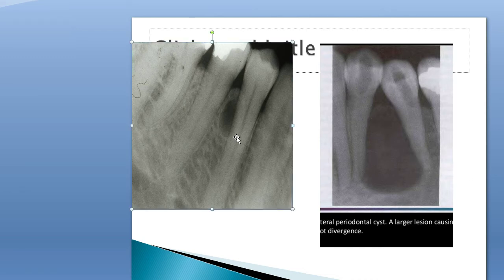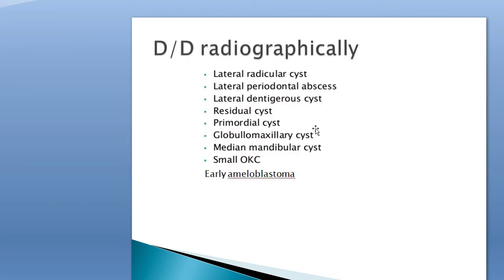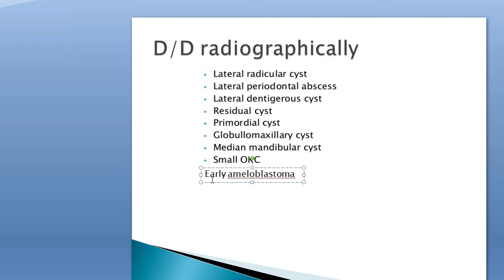For radiographic differential diagnosis, we can differentiate from: lateral radicular cyst, lateral periodontal abscess, lateral dentigerous cyst, residual cyst, primordial cyst, globulomaxillary cyst, median mandibular cyst, small odontogenic keratocyst, and early ameloblastoma — all of which have radiographic appearances resembling the lateral periodontal cyst. Therefore, histopathological confirmation is necessary to diagnose the disease.